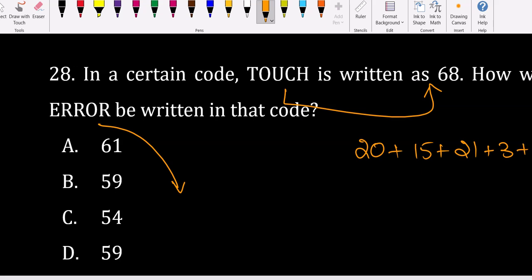T is 20, O is 15, that's 35, plus U which is 21 makes 56, plus C which is 3 gives 59, plus H which is 8 equals 67. They've given 68, so there's a plus 1 being added.